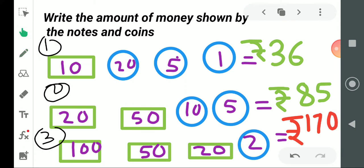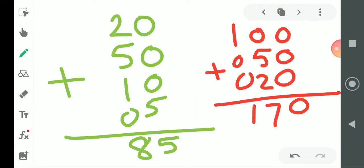So students, what is given in the rectangle are notes, and what is given in the circle are coins. You have to add these two. Wait, here students, we forgot to add 2. The answer will become 170 plus 2, which becomes 172. We forgot to add the 2 coin. Our answer will be 172.